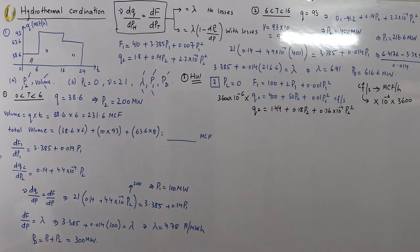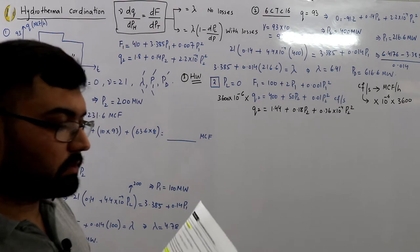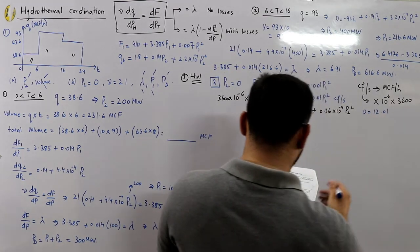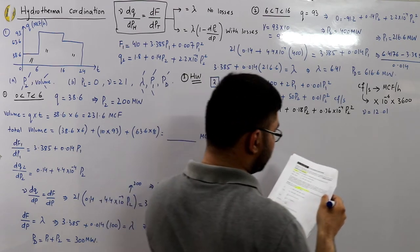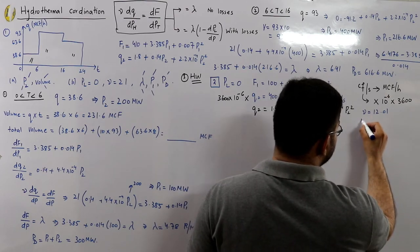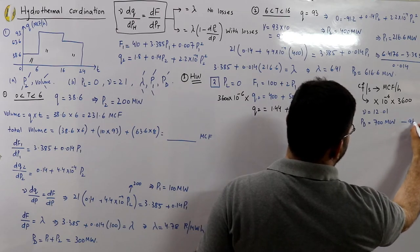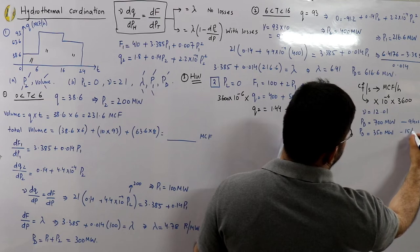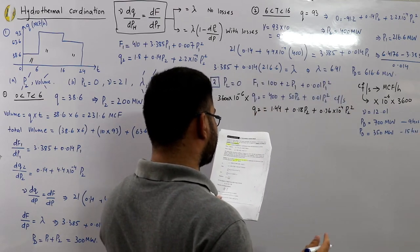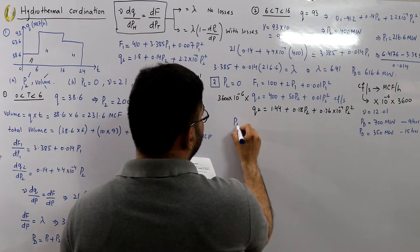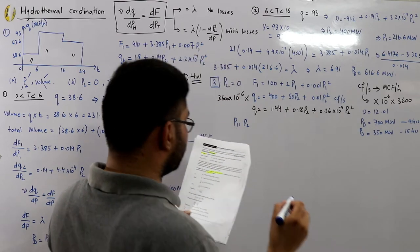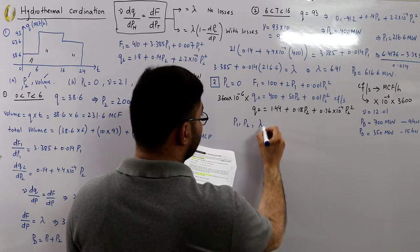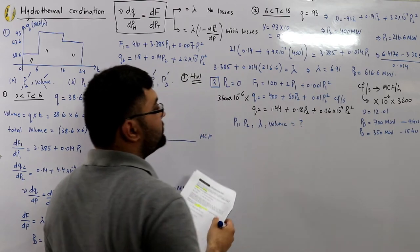The optimal water conversion coefficient μ = 12.01. The daily load demand is 700 megawatts for the first 9 hours and 350 megawatts for the remaining 15 hours. We need to compute the optimal P1, P2, lambda, and the available volume of water for each interval.